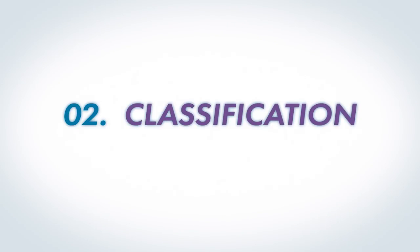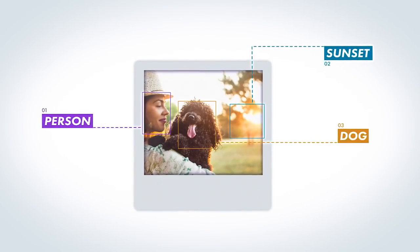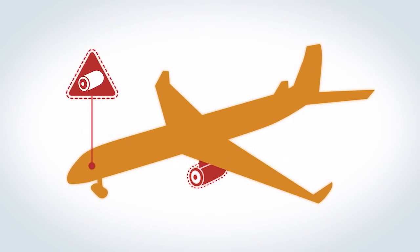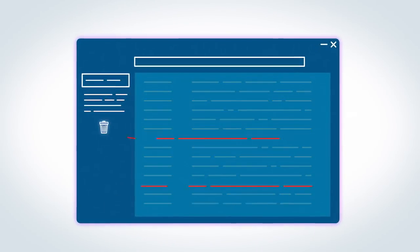This is classification, and you use it for things like object detection in images, predictive maintenance, and spam detection.